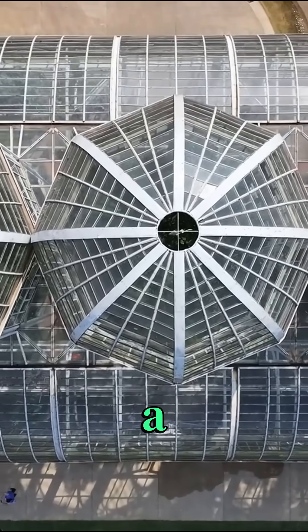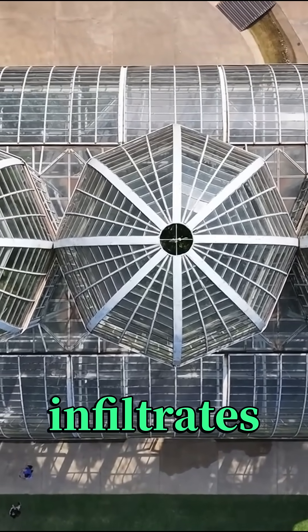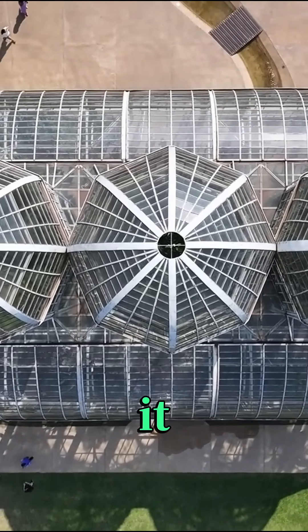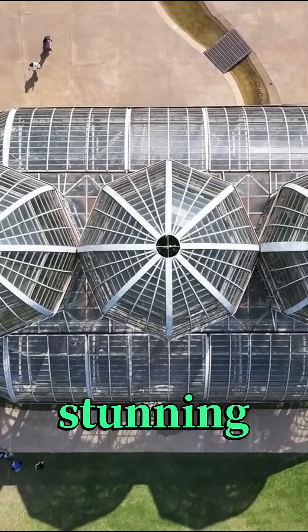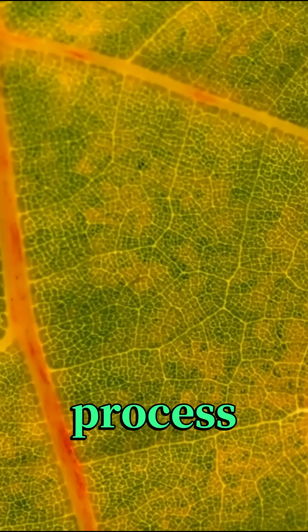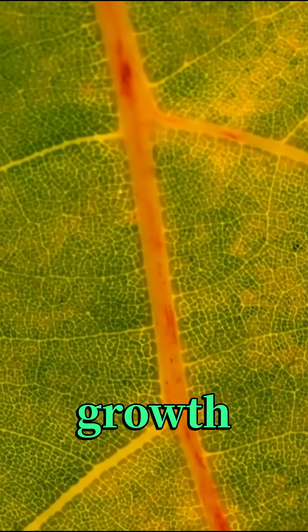When gallium is placed in a solution of aluminum, it infiltrates the aluminum structure, causing it to break down and form these stunning plant-like structures. This process is known as metallic dendritic growth.